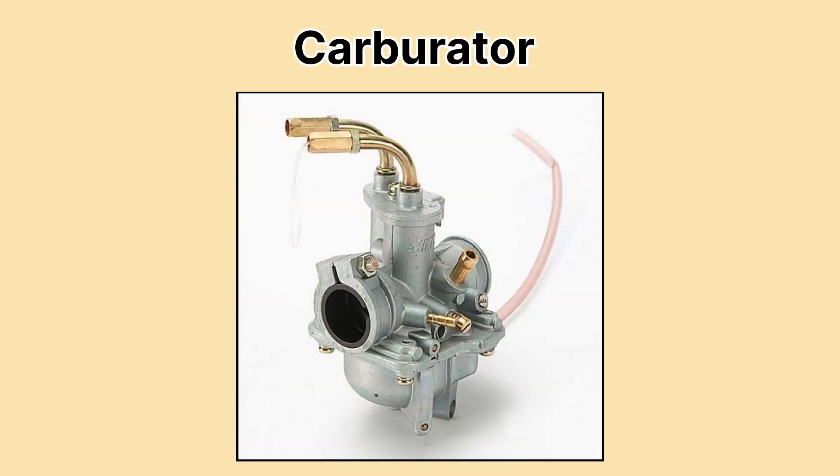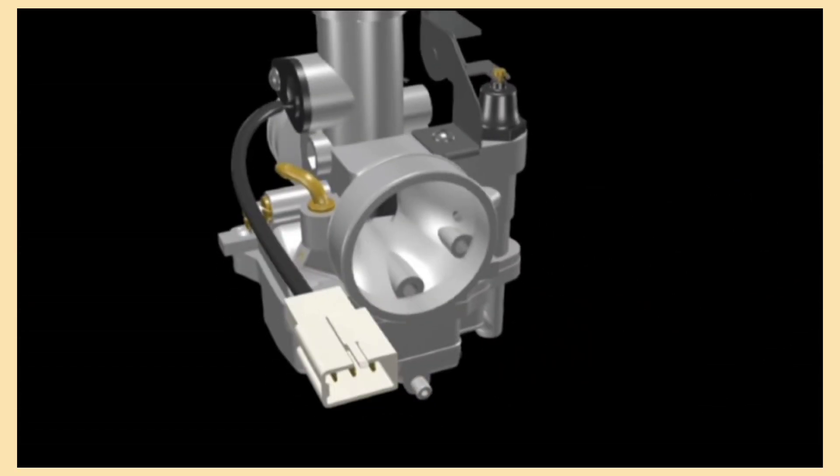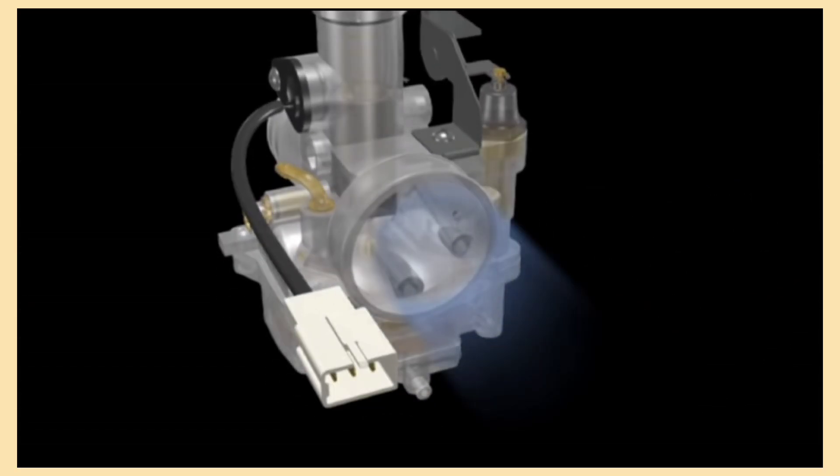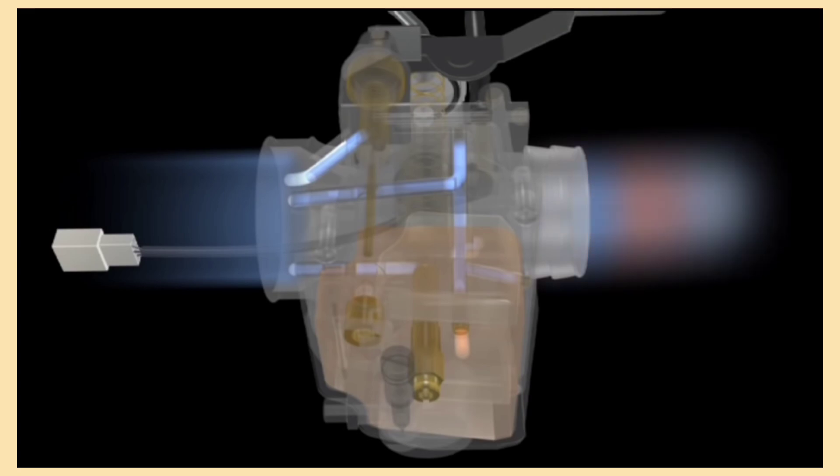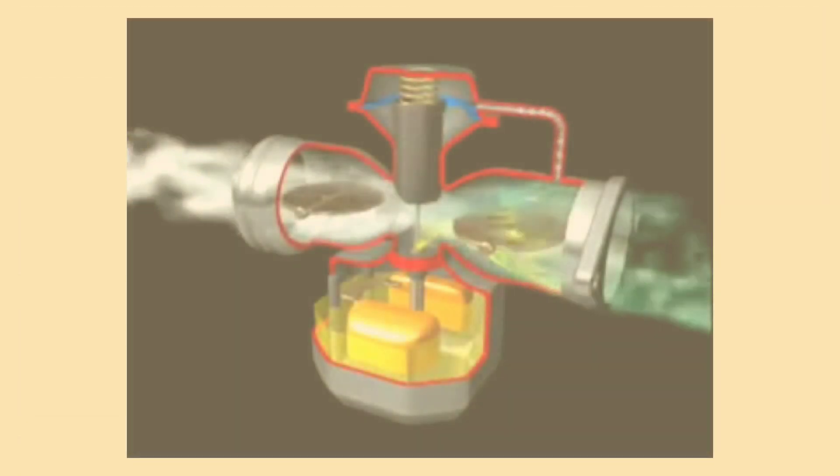Let's start with the carburetor. This is the fuel delivery system used in most cars built before the 1980s. Essentially, a carburetor is a mechanical device that mixes air and fuel together before sending it into the engine for combustion. It's a pretty straightforward system that relies on simple parts. Here's how it works.